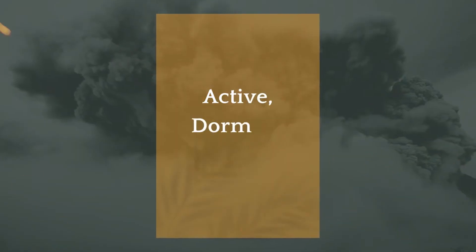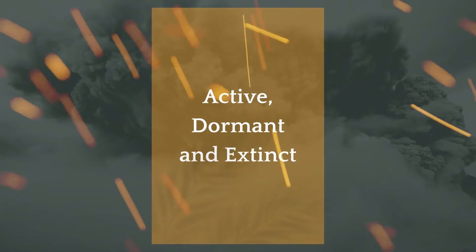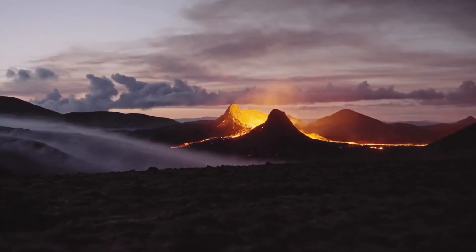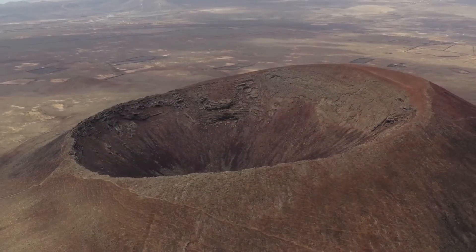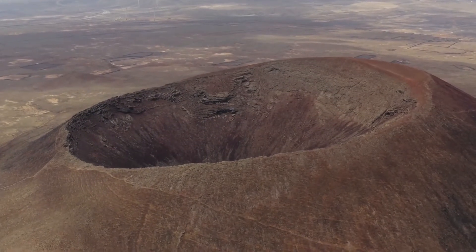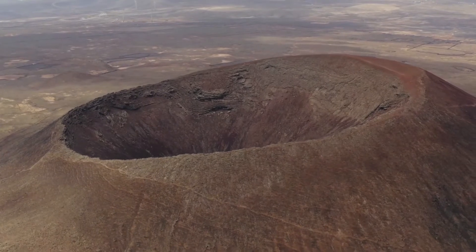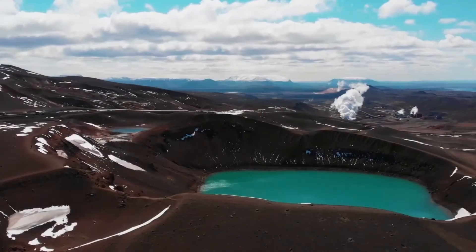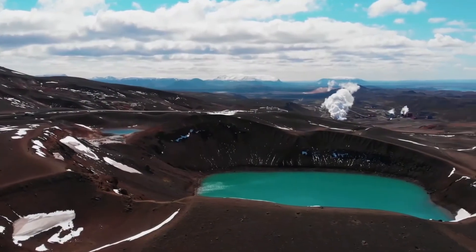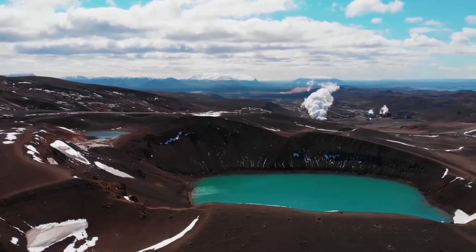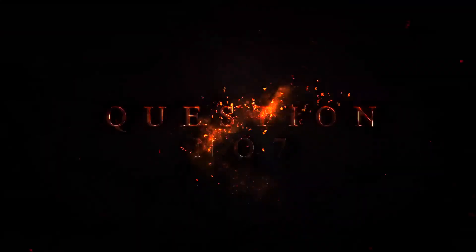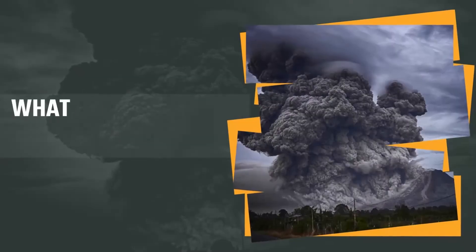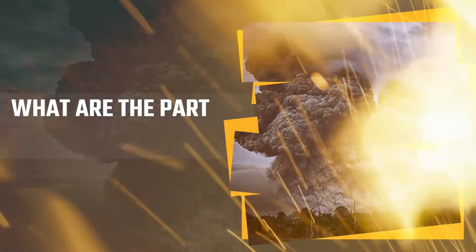The answer is active, dormant, and extinct. An active volcano is one which has recently erupted and there is a possibility that it may erupt soon again. A dormant volcano is one that has not erupted in a long time but there is a possibility it can erupt in the future. An extinct volcano is one which has erupted thousands of years ago and there is no possibility of an eruption. Question number seven: what are the parts of a volcano?